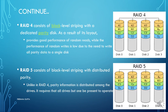RAID 4 consists of block-level striping with a dedicated parity disk. Blocks A1, A2, A3 are distributed with parity on one dedicated disk. This provides good performance for random reads while random write performance is low, because all parity data must be written to a single disk. RAID 5 also uses block-level striping but with distributed parity. Unlike RAID 4, parity information is distributed among all the drives. It requires that all drives but one be present to operate.